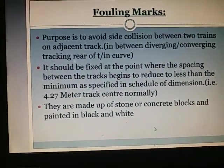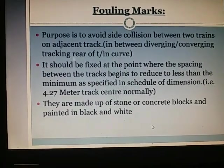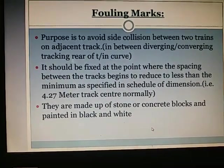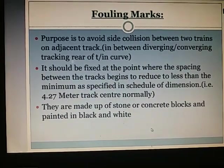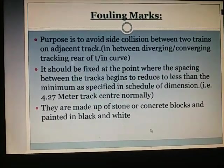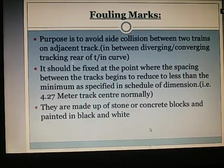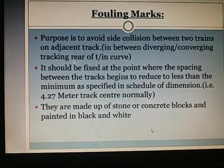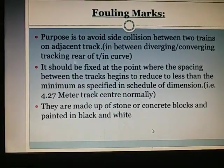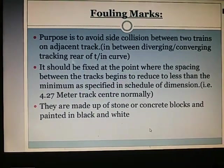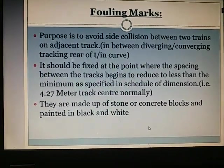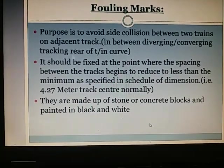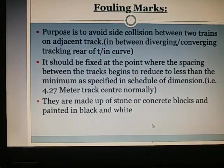Fouling marks: The purpose of fouling marks is to avoid side collision between two trains on adjacent tracks. They should be fixed at the point where the spacing between the tracks begins to reduce to less than the minimum as specified in the schedule of dimensions. They are made up of stone or concrete blocks and are painted in black and white.